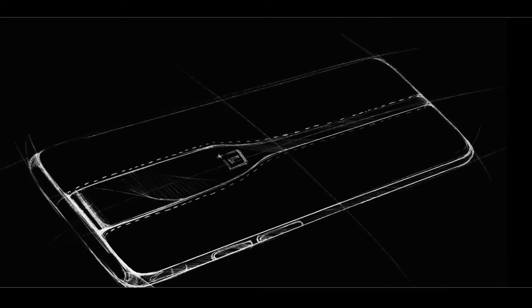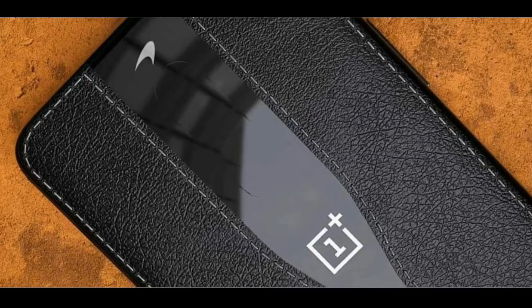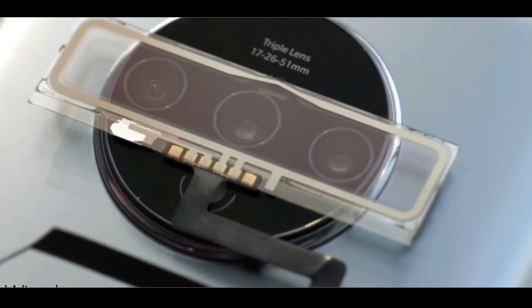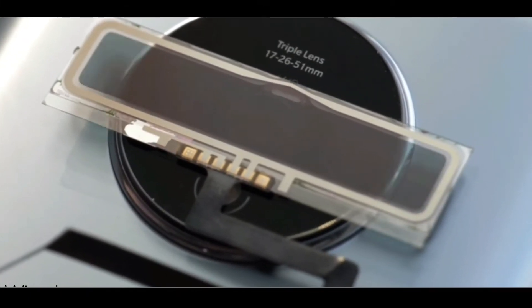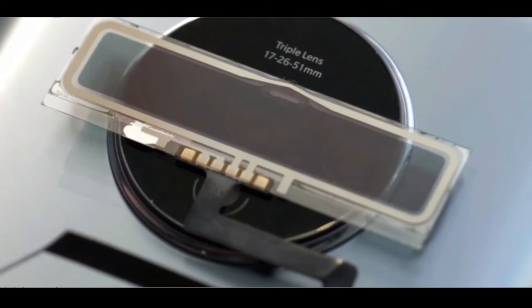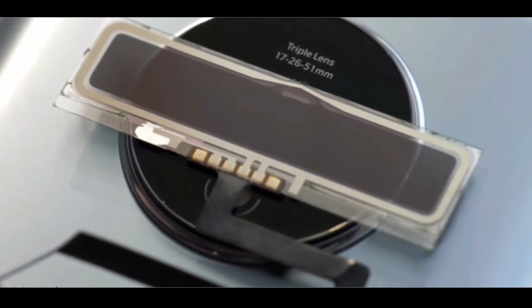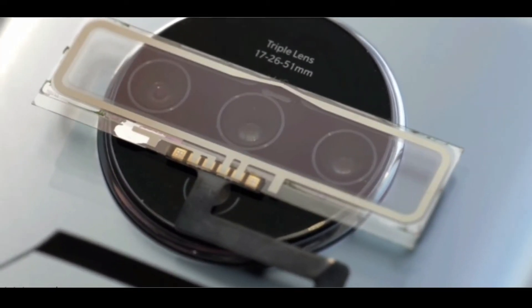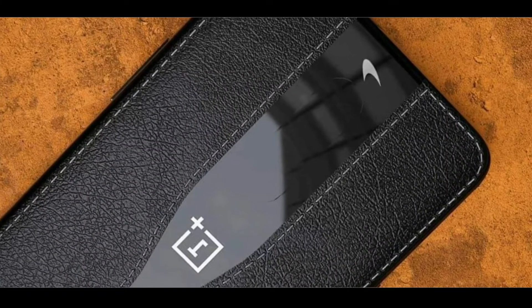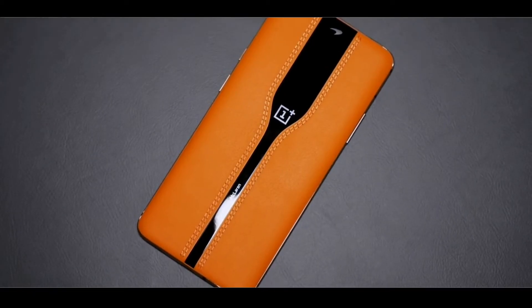So essentially by playing around with its materials and chemistry, you can have that glass behave as you want. So in case of OnePlus Concept One, they decided to make it opaque and transparent when required, similar to the windshields on the McLaren cars it was mimicking.